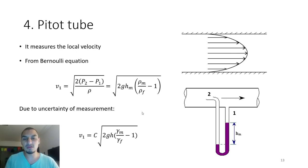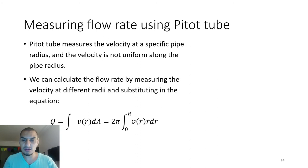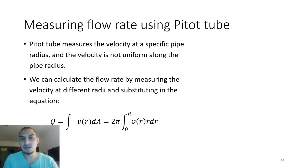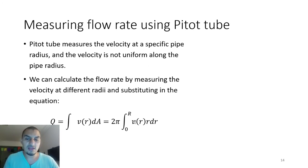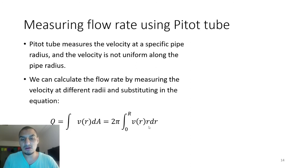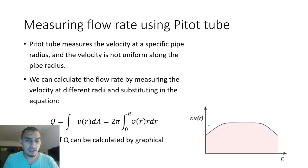If you want to get the volumetric flow rate, you calculate Q = ∫V dA. In general Q = A × V, but here the velocity is not constant — it's a function of radius. To get the total flow rate you must integrate. The differential area element dA = 2π r dr, so Q = 2π ∫ r·V dr. Here r is the independent variable and the integrand is r multiplied by V.